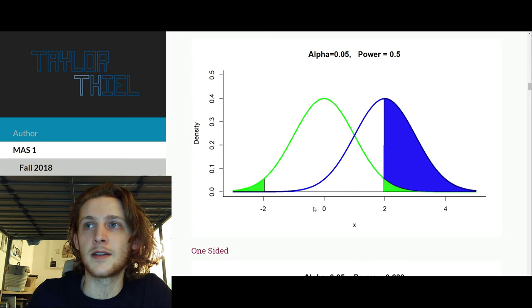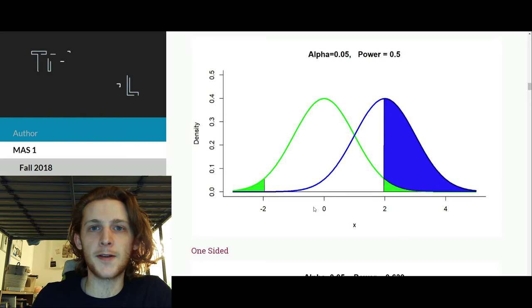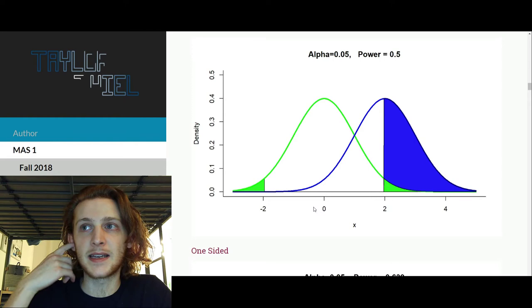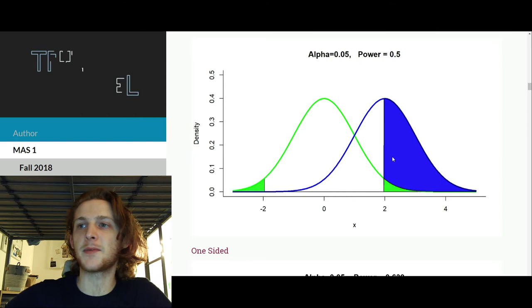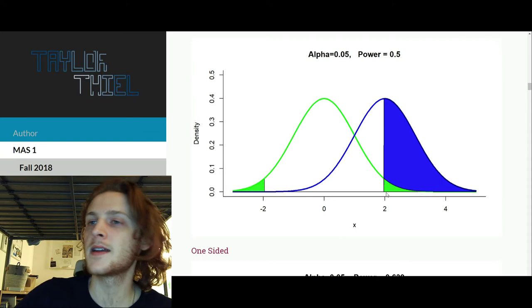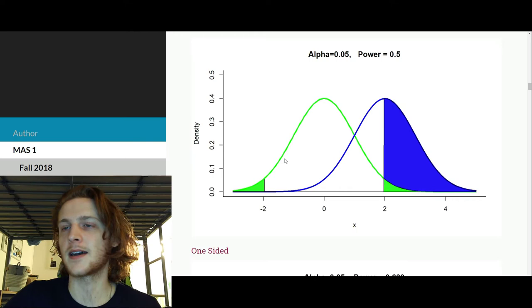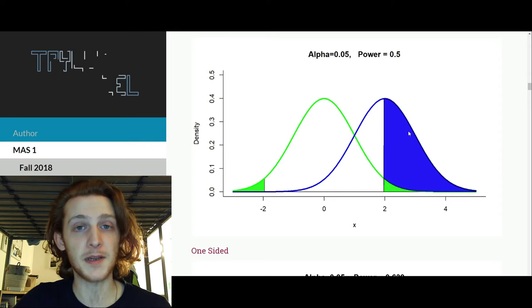To get our power, we can then say, well, if we assume the alternative is true, what is the probability that we successfully reject the null hypothesis? So the blue curve is the actual distribution, and then what's the probability we actually reject? So that we're actually above 1.96 is the metric here, or less than negative 1.96. And although there is some area to the left over here, it's basically 0, and we say the power is 50%. So we're going to successfully reject the null hypothesis 50% of the time.